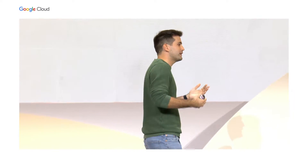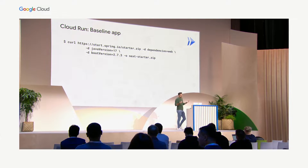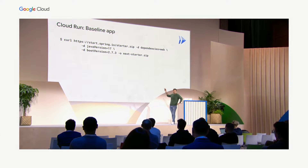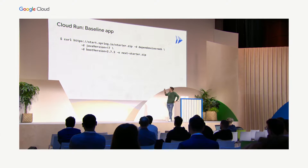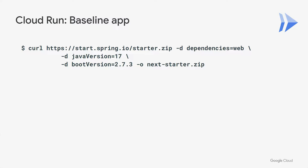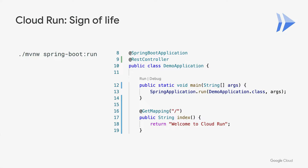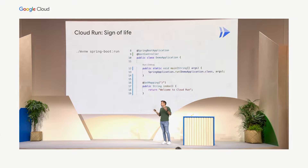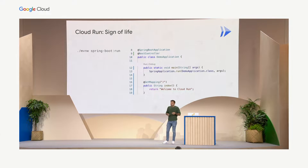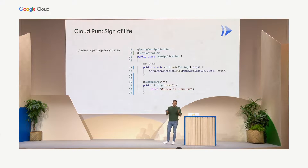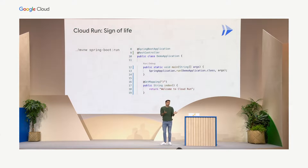Let's walk through a fictitious Java application. First, we curl from the Spring website the starter kit, choosing the web dependency — a simple Java API service we want to deploy. We download it, unzip it, and open the main demo application class. We add a sign of life: a message saying 'hello from Cloud Run'. In Spring, we add a REST controller annotation, a GET mapping with a root URL, and our simple application is ready to deploy and test.